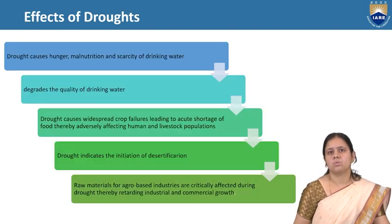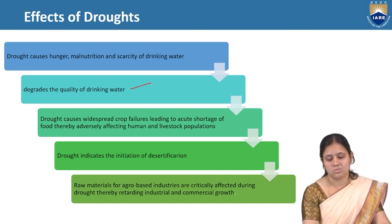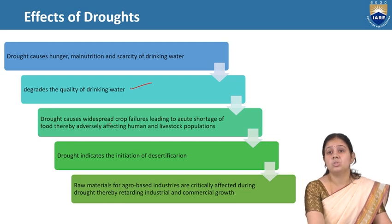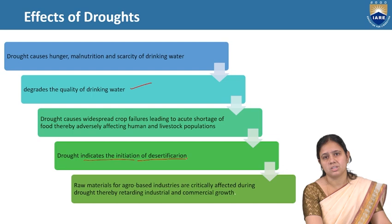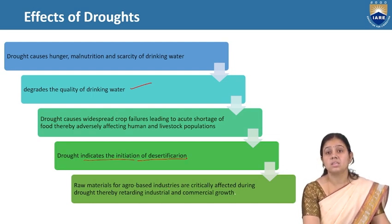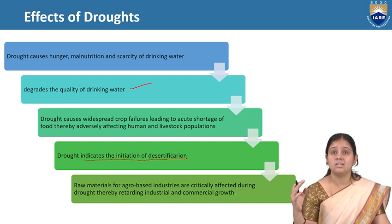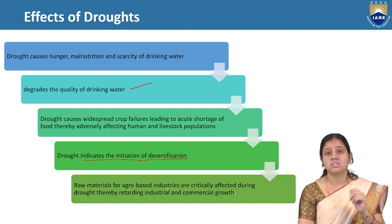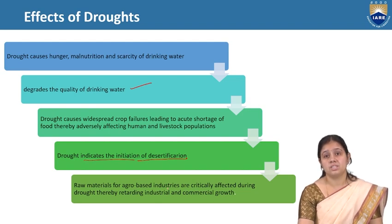Effects of drought: drought causes hunger, malnutrition, and scarcity of drinking water, and also degrades the quality of drinking water. It causes widespread crop failure, leading to acute shortage of food, adversely affecting human and livestock populations. Drought indicates the initiation of desertification. Raw materials of agro-based industries are critically affected during drought, thereby retarding industrial and commercial growth.